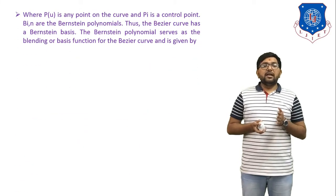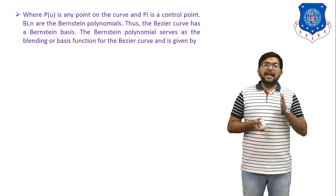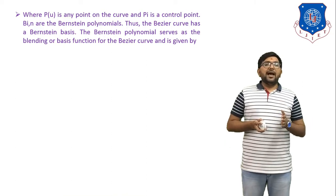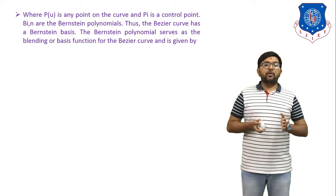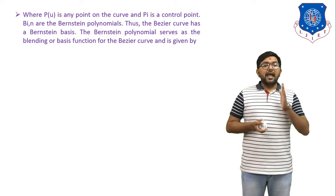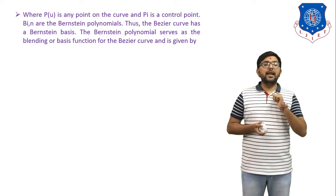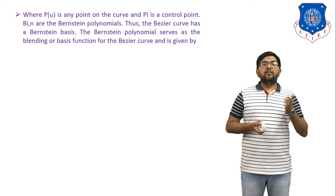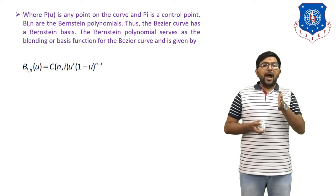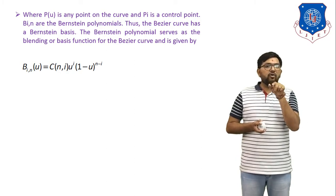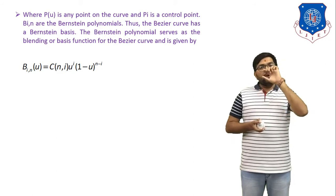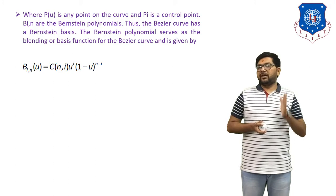In this equation, P(u) is any point on the curve, Pᵢ is a control point, and B(i,n) are the Bernstein polynomials — so the Bezier Curve has a Bernstein basis. The Bernstein polynomial serves as the blending basis function and is given by: B(i,n,u) = C(n,i) · uⁱ · (1−u)^(n−i).